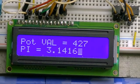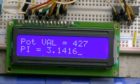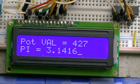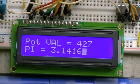Okay, what you see in here, it says pot value 427. The value of pi, of course, is rather obvious. I can vary the pot.